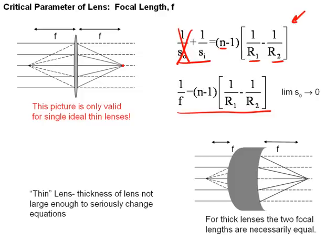For thick lenses, which is a lens large enough to change the equations, in other words the thickness here gets large, these equations are no longer good. It becomes more difficult to measure where the focal length is for a very thick lens. And so this picture is really valid for an ideal single thin lens. And later on in the semester, of course, we'll cover thick lenses and ways to characterize those types of lenses.